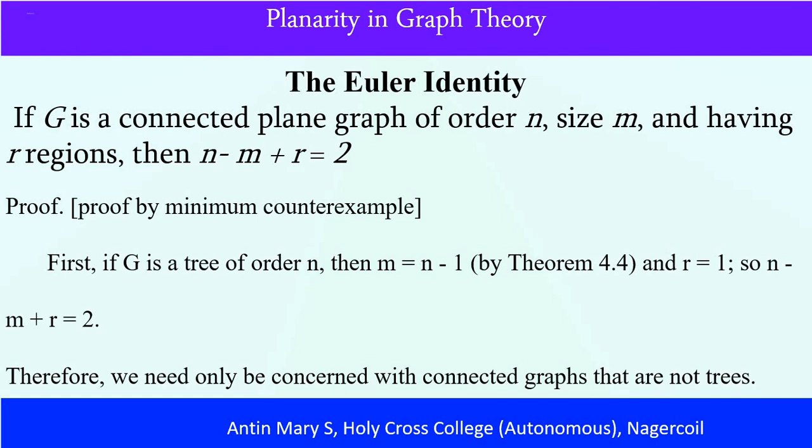An important result is the Euler identity. Euler found that if G is a connected plane graph of order n, size m, and having r regions, then n minus m plus r equals 2. If it is a plane graph this will satisfy n minus m plus r equals 2, but if it satisfies, it may not be a plane graph. We prove this by minimum counterexample. First, if G is a tree of order n, then number of edges is n minus 1, and our region is only 1 because cycles are not there in a tree. A tree is a connected acyclic graph. So n minus m plus r equals 2 is satisfied here.